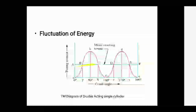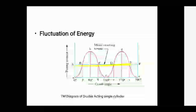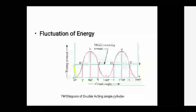The area you are going to see within one complete revolution is the work done required to be carried out, and it is represented by area AAFE. Work done, or energy, is nothing but the product of turning moment multiplied by the crank angle.